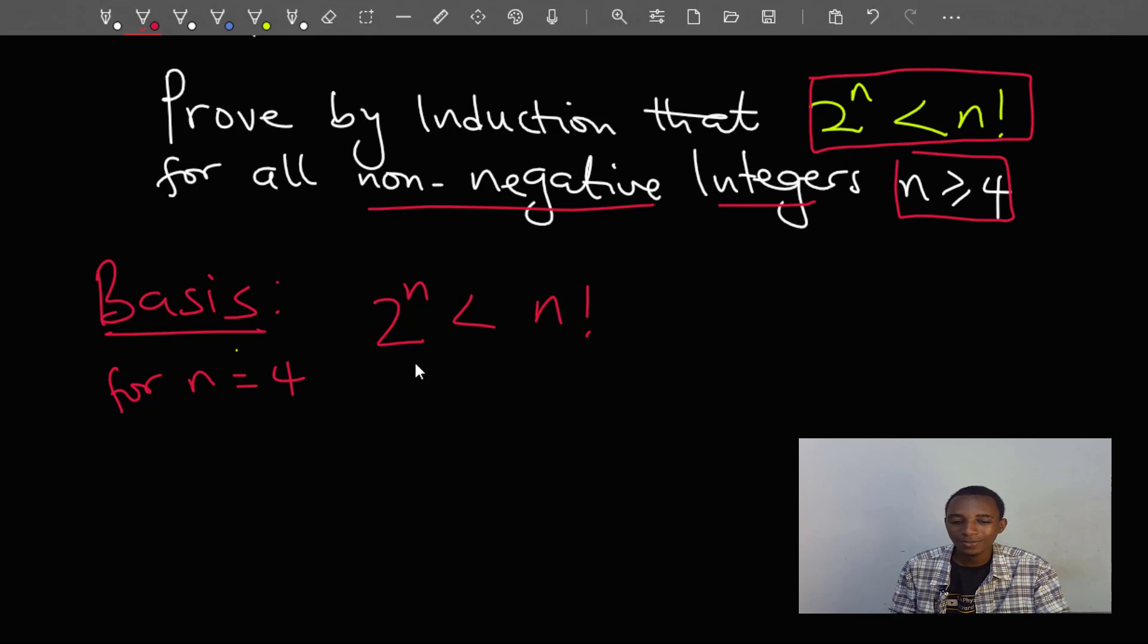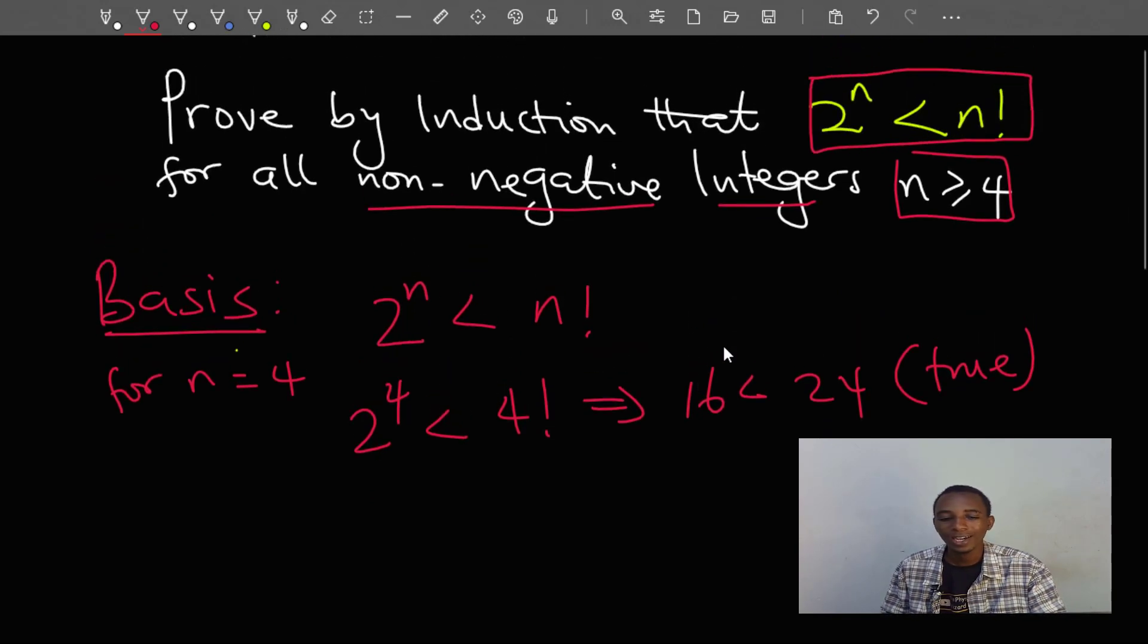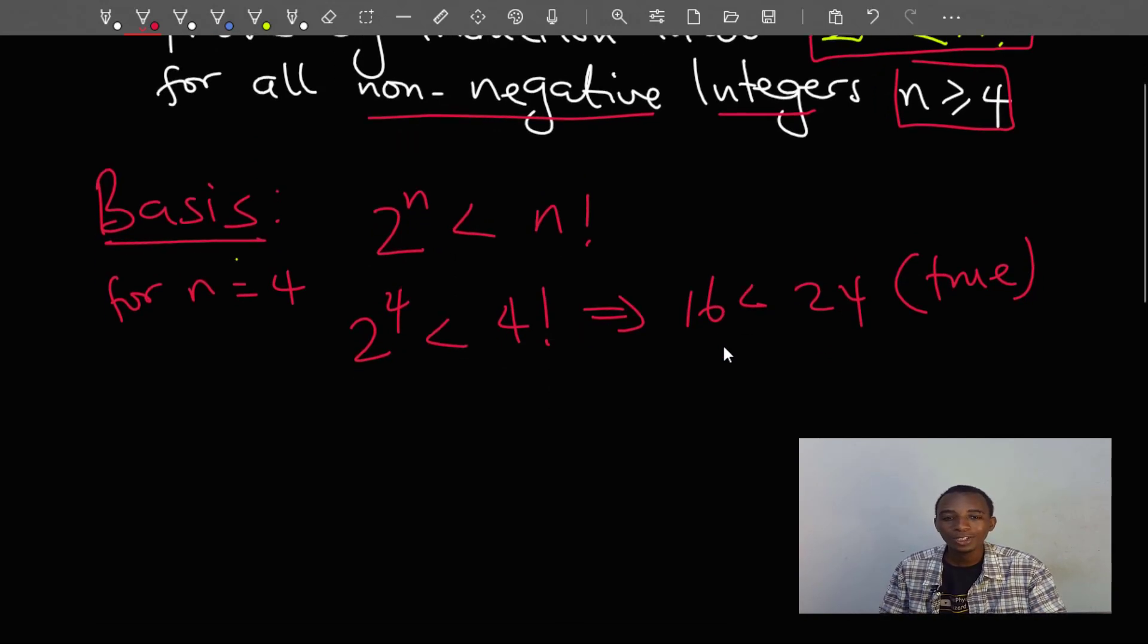That's the smallest value in this range. So we'll have 2 to the power 4 less than 4 factorial. This implies that 2 to the power 4 is 16, 4 factorial is 24, which is true. So the proposition is true for n equals 4. You can test some other values like 5 or 6, and that should also be true.